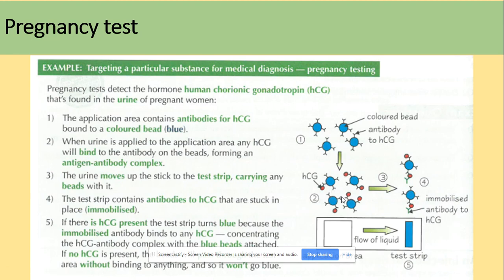The test chip contains antibodies to HCG hormone that are stuck in place — they are not moving. If HCG is present, that chip is going to turn blue, because the antibody binds to any HCG hormone present. The HCG antibody complex with those blue threads will attach, so the color will change to blue. If HCG is not present, there won't be any change of color. So that was the pregnancy test.